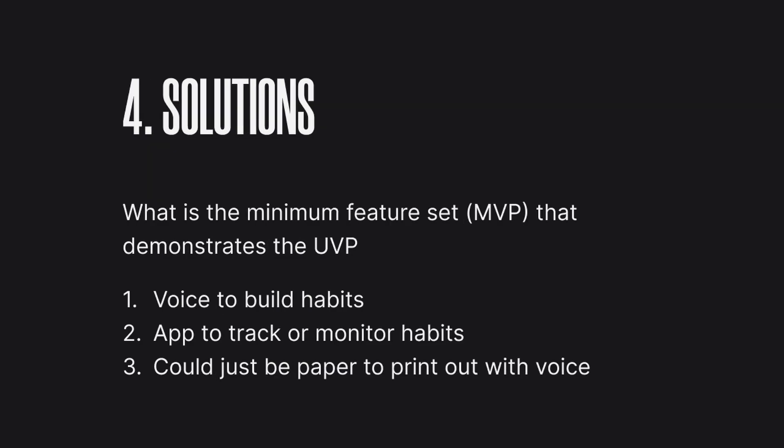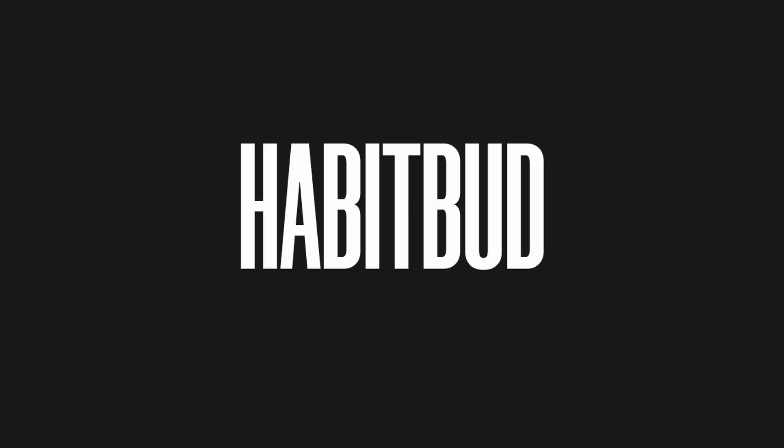Lastly, number four is solutions — what is the minimum feature set, the MVP, that demonstrates the UVP? I'm thinking of a voice-driven journey to build habits, so rather than text it's going to be voice control, like Alexa for example. There could also be an app to track or monitor habits, or even just paper to print out with voice. It doesn't have to be super tech — it could be something very simple.